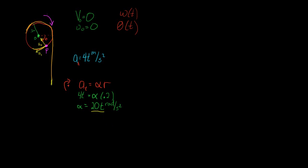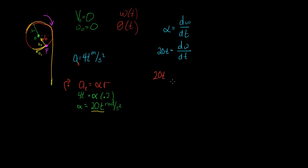We have this formula for angular acceleration: alpha equals the derivative of angular velocity with respect to time. We know alpha is 20t, so 20t equals d-omega/dt. We can separate our variables and integrate — the dt comes over to the other side, giving us 20t dt equals d-omega.